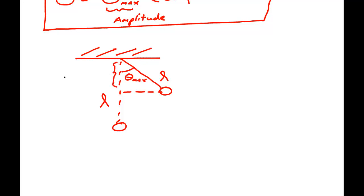This distance here would be L cosine theta max. At that point V would equal zero. So the energy would be K plus U.